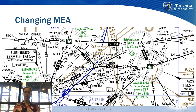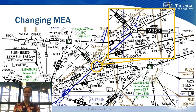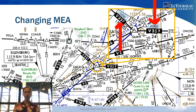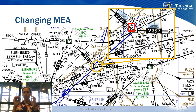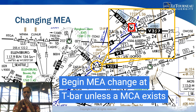If you have an MEA change, it is denoted by a T-bar on the chart. For example, coming in on Victor 357 and needing to change altitudes at Quint Intersection — because the MEA on the other side goes up to 5,500 feet — you would notice the T-bar at the end of the Victor Airway segment, which tells you that you need to change your MEA.